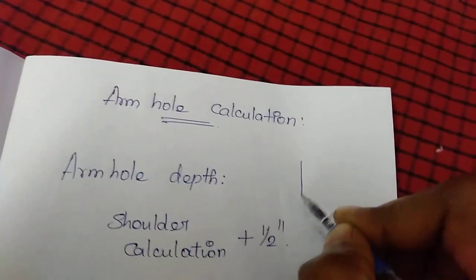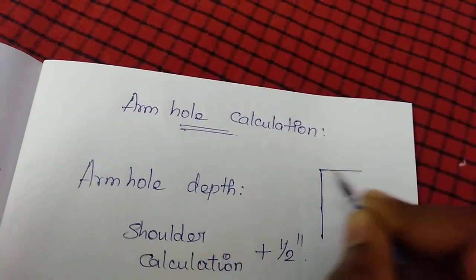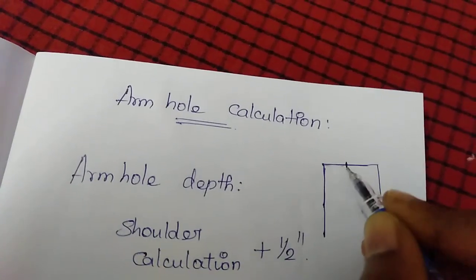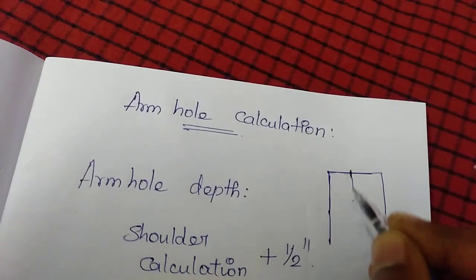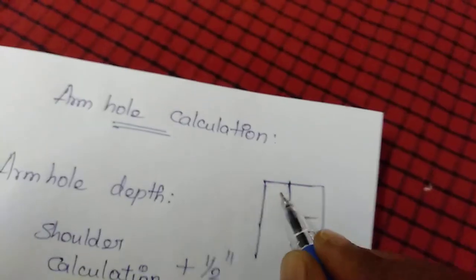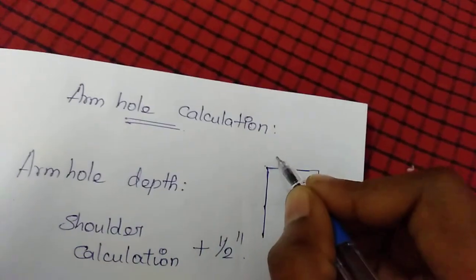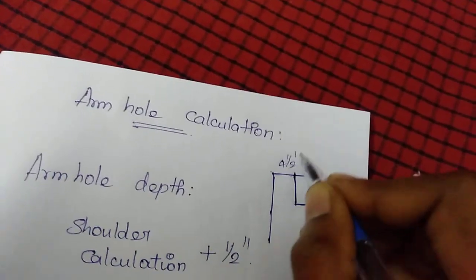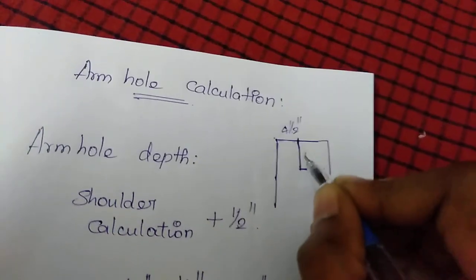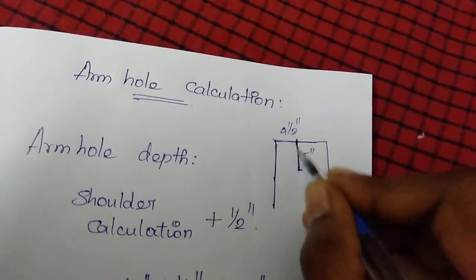We have to mark the armhole depth. Now we have to calculate the length. We can calculate it by adding half inch, and we will calculate the length depth.